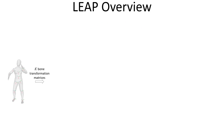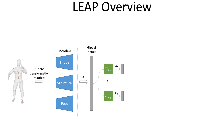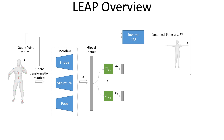The input to our system is a set of bone transformations. They are first transformed by three encoders to a global feature vector that incorporates information about the human shape, structure, and pose. This feature is then customized for each bone by a per-bone learnable linear layer. On the other side, the input query point is projected to the canonical pose via the inverse linear blend skinning network that predicts skinning weights as an intermediate step.